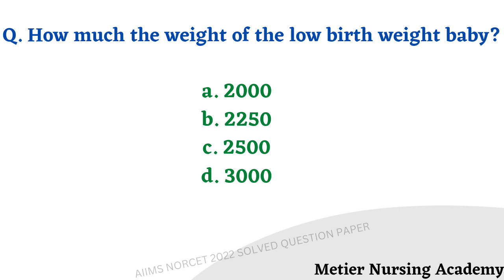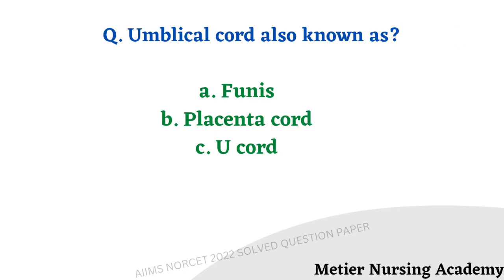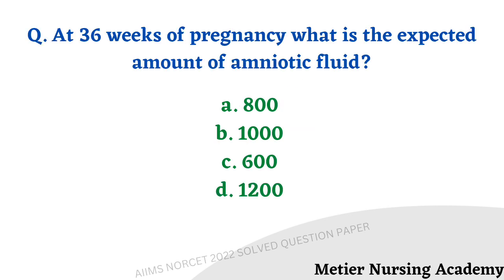How much does a low birth weight baby weigh? Options: 2000, 2500, 2250, and 3000 grams. The right answer is option C, 2500 grams. The umbilical cord is also known as funis, placental cord, or u-cord — the right answer is option A, funis. It is a direct and easy question. At 36 weeks of pregnancy, what is the expected amount of amniotic fluid? Options: 800 ml, 1000 ml, 600 ml, 1200 ml. The right answer is option B, 1000 ml.